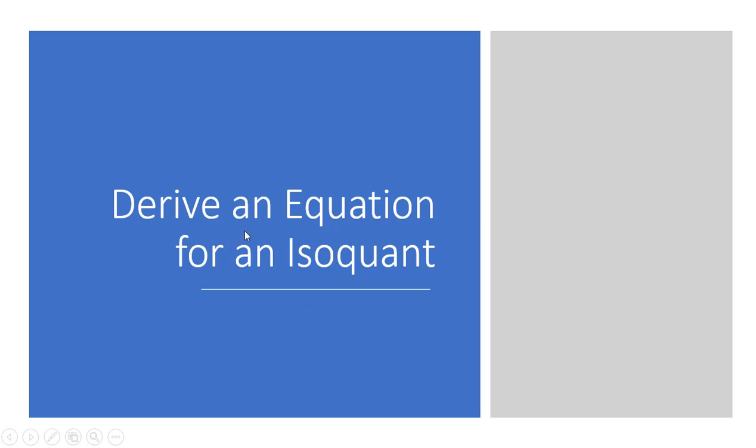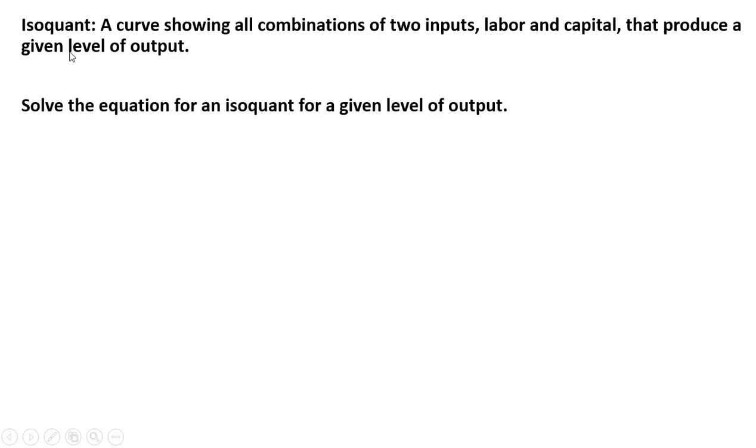Hello. In this video, we're going to derive an equation for an isoquant. An isoquant is a curve showing all combinations of two inputs, labor and capital, that produce a given level of output. We're going to solve the equation for an isoquant for a given level of output.